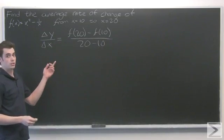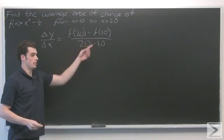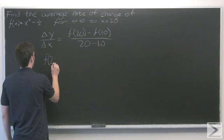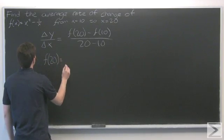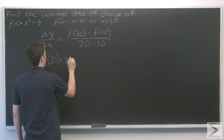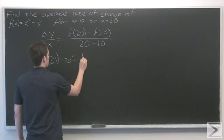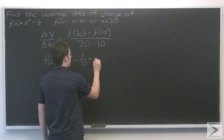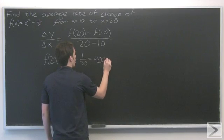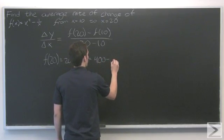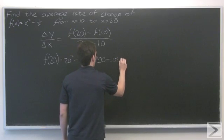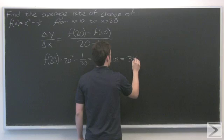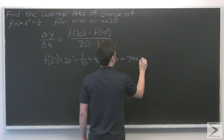We can see that we're going to need to evaluate the function at 20 and at 10, so let's go ahead and do that. f of 20 is 20 squared minus 1 over 20, which is the same thing as 400 minus 0.05. So this is going to be 399.95.